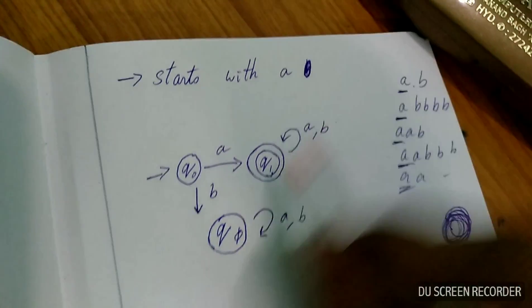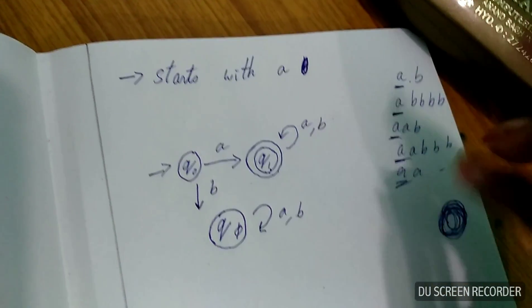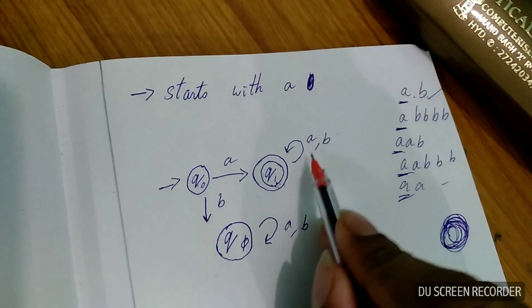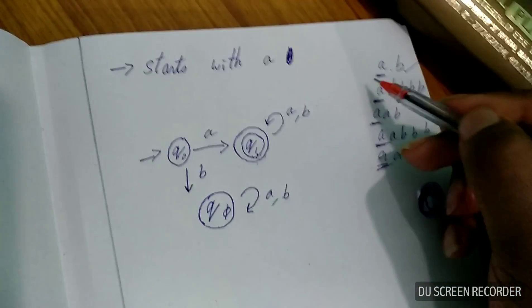Let's take from here. A, B, B, B, B. It's reaching to the final state. Accepted. Because here B is there, self-loop, it will be again in the same state. Accepted.